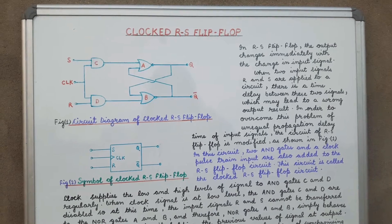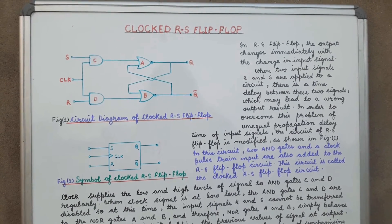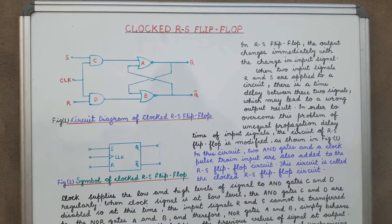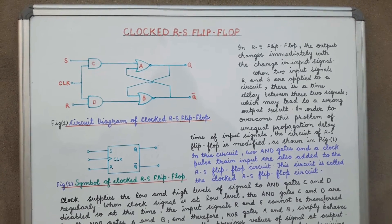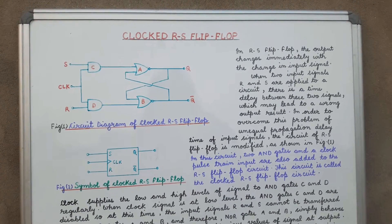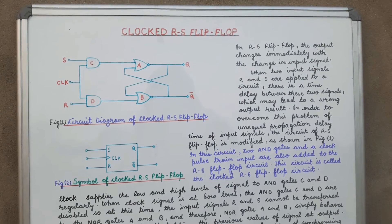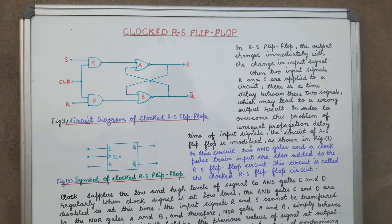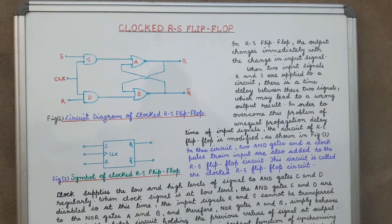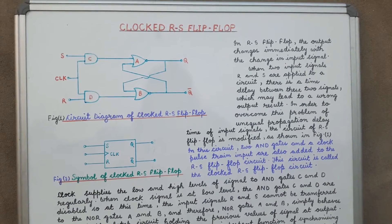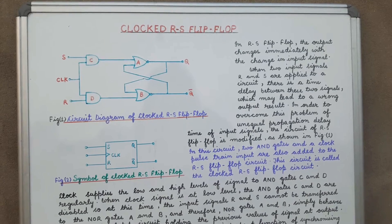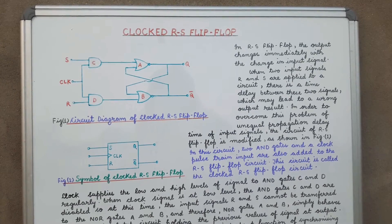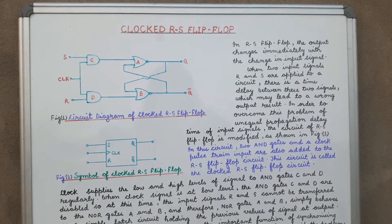As discussed in the previous class, the RS flip-flop has a disadvantage: the R and S inputs are not applied at the same time due to propagation delay between the two signals, which can lead to a wrong output result. To overcome this problem, some modifications are made to form the clocked RS flip-flop.